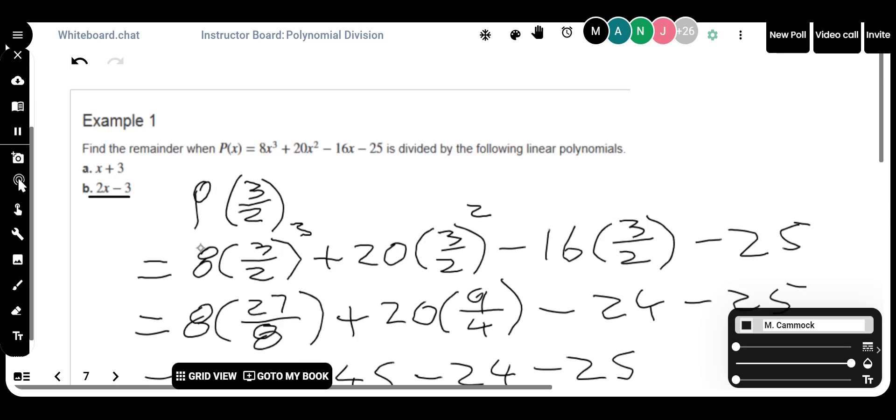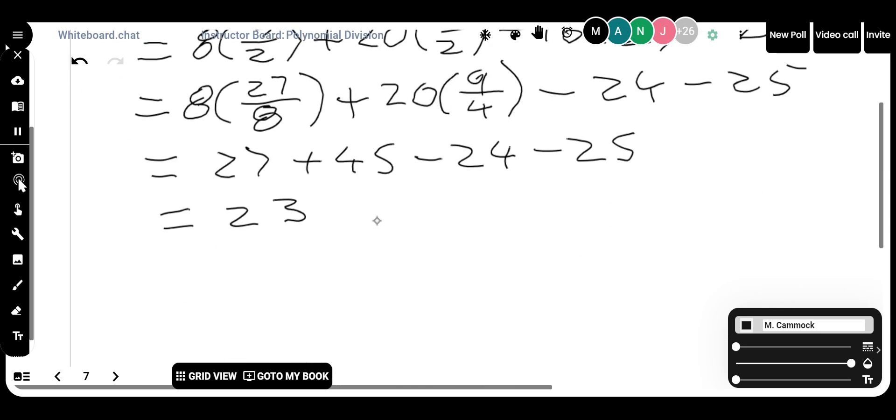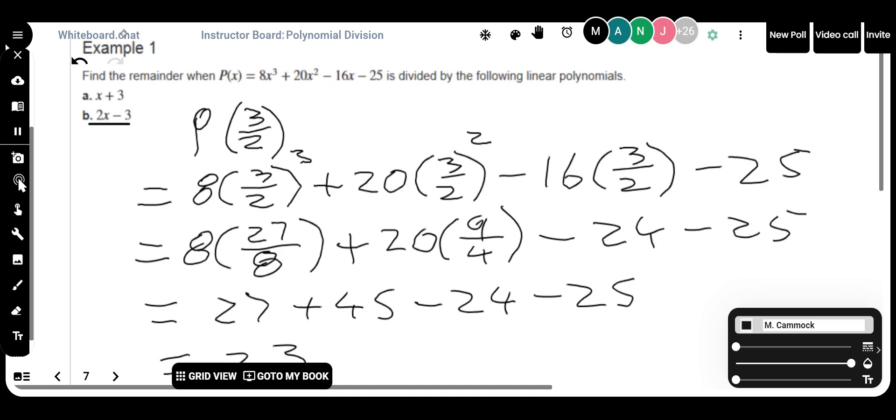So there you go. If all I want was a remainder, then I could just simply say I'm dividing by 2x minus 3, I'm going to throw 3 over 2 into the function, and that will give me what the remainder is. If I went through and did the actual long division, I would still get the remainder of 23. On your own you can do that. If anybody wants to come and let us do some more of that long division in the 3 to 330, please join me.